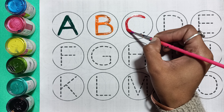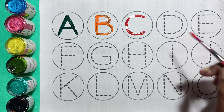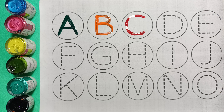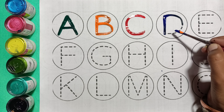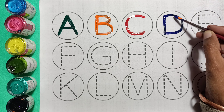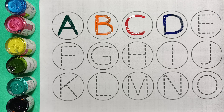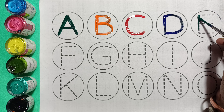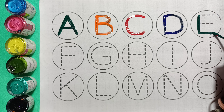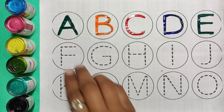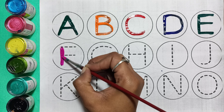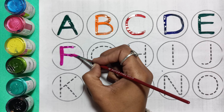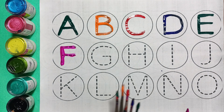D for dog. Blue color. E for elephant. Green color. F for fish. Magenta color. G for giraffe.